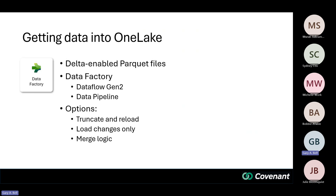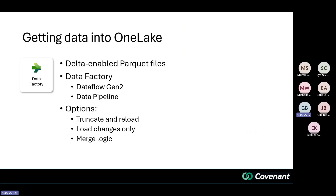There's a final step in the bottom right corner where you can tell it — once you've done all the transformations, what do you want to do with the data? You can put it into an Azure SQL database, or to get data into the One Lake as Delta-enabled Parquet files, you'd put it into what Fabric calls a warehouse or a lakehouse. By doing that, it creates the Delta-enabled Parquet files and loads data into the data lake. Data Pipelines are the other option, familiar to those who've used Data Factory in Azure — it's an orchestration tool.